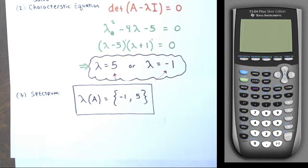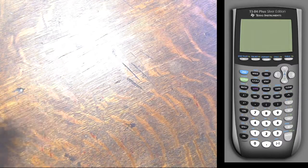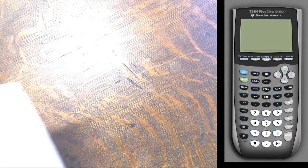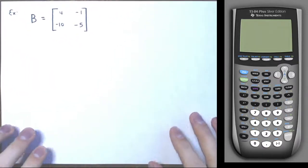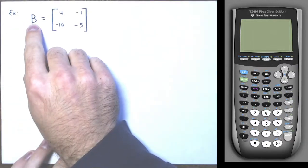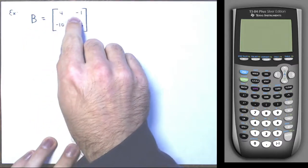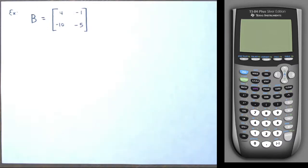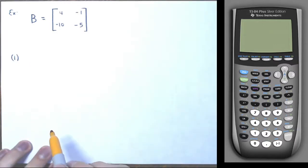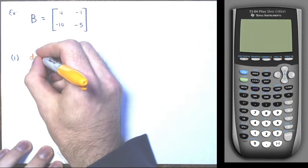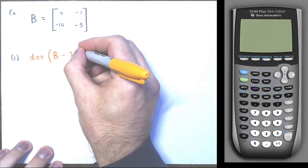For the second example, I have a 2×2 matrix B with columns [4, −10] and [−1, −5]. Same procedure: find the spectrum. First, the characteristic polynomial — the determinant of B − λI. B − λI has [4−λ, −1; −10, −5−λ].